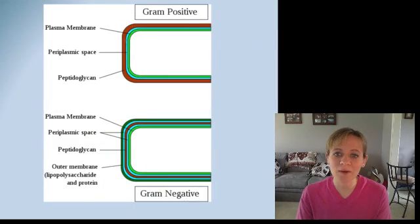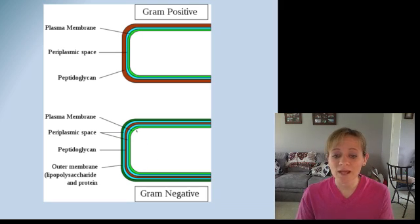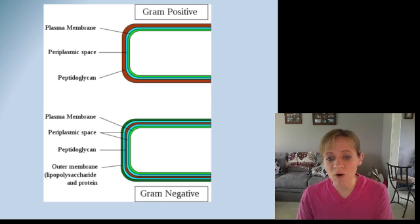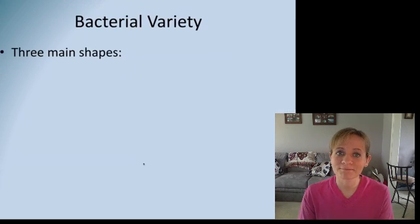Here's a look at this: gram-positive in red has that really thick layer of peptidoglycan. Gram-negative has a lot more complexity, and then in red, a very small layer of peptidoglycan.